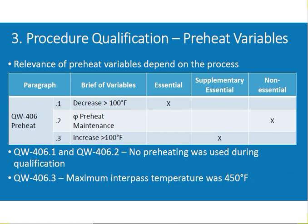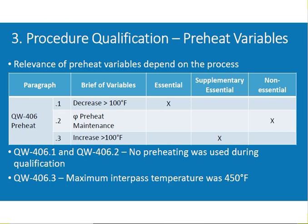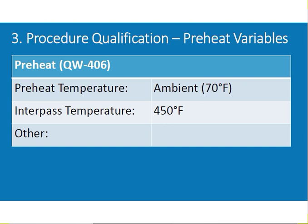QW-406 is preheat variables. QW-406.1 is essential variable, QW-406.2 is non-essential, QW-406.3 is supplementary essential. QW-406.1: no preheating was used during qualification. QW-406.3: the maximum interpass temperature was 450 degrees Fahrenheit. The ambient temperature was 70 degrees Fahrenheit. The maximum interpass temperature is the minimum preheat temperature — this is important to remember.